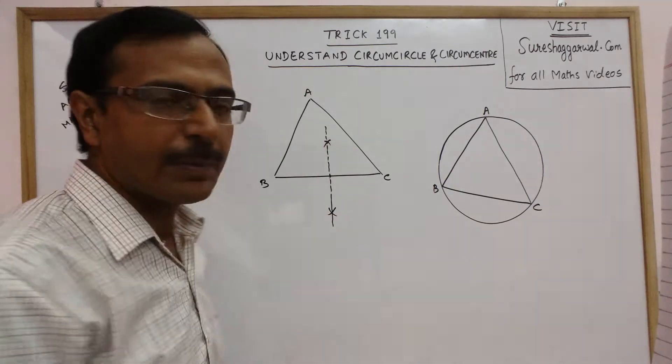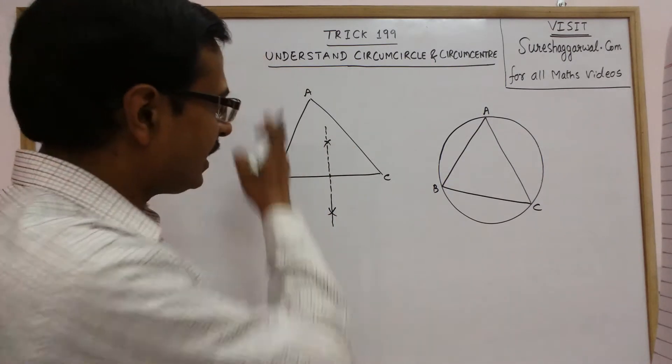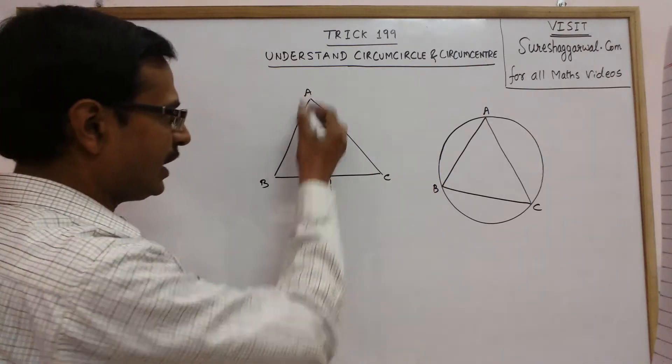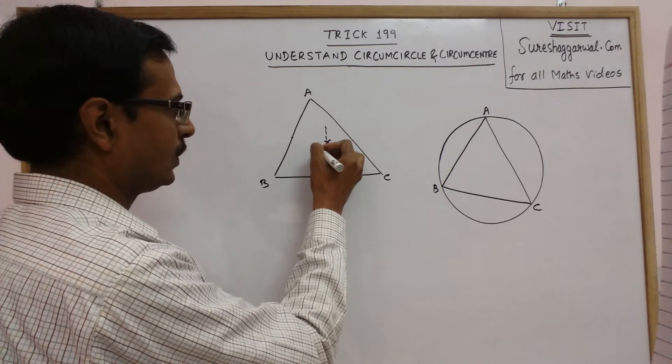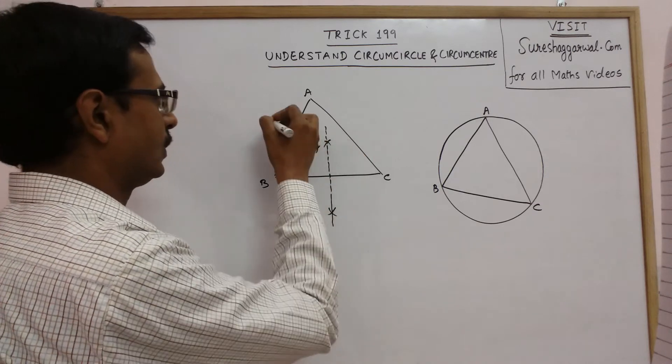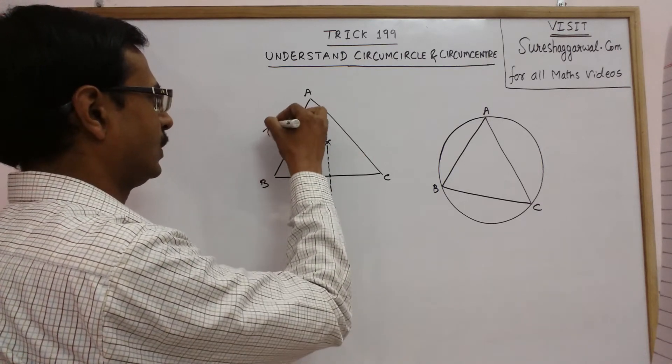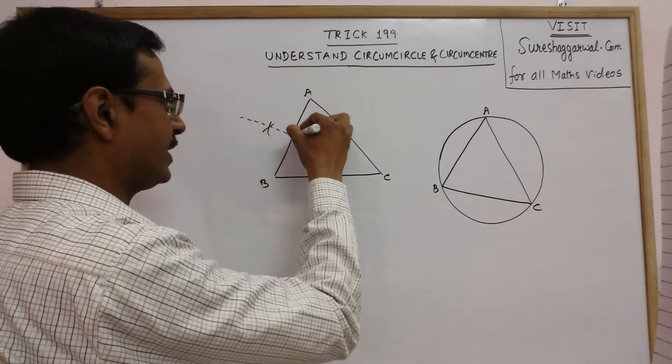Similarly, if we draw the perpendicular bisector of any other side, say AB. Now this is the perpendicular bisector of AB.